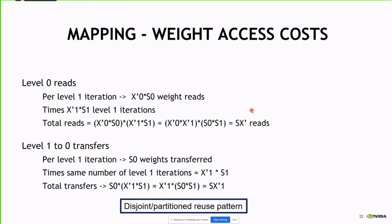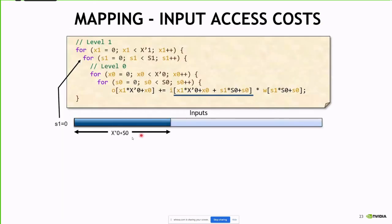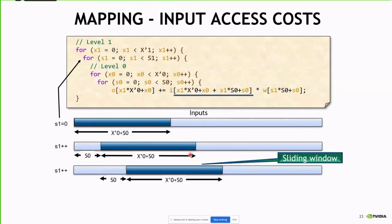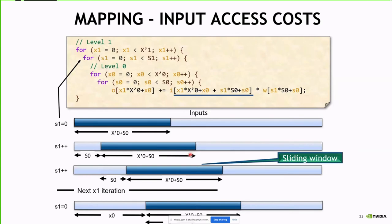This is what we call a disjoint or partitioned reuse pattern, because each tile was disjoint from the last. For inputs, there's a sliding window pattern — as we increment S1, the window slides over a little bit. You can keep already-resident data in your buffer, so you only transfer the delta between the current tile and the next tile. That's what Maestro does in its analytical model: it compares the delta between what you're working on now versus the next time step, and that determines the fill count and energy cost.